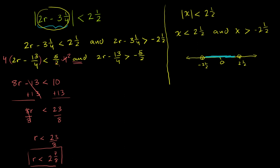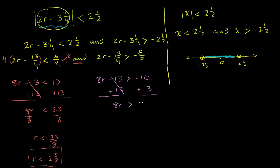The other condition: 2r minus 13 fourths has to be greater than negative 5 halves. Multiply both sides by 4: 8r minus 13 is greater than negative 10. Add 13 to both sides — those cancel — leaving 8r is greater than 3. Divide both sides by 8, and r has to be greater than 3 eighths.